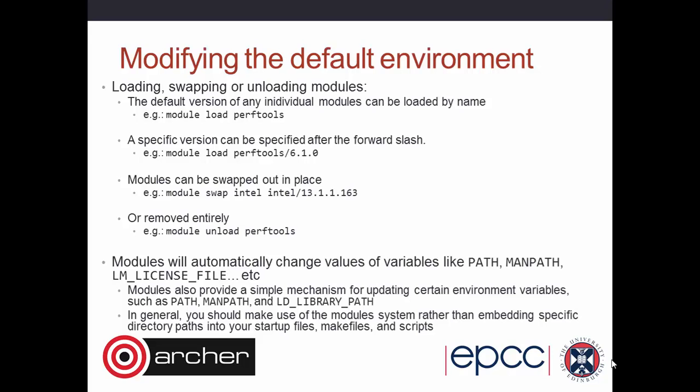If you want to load a module that's not loaded by default, you do 'module load'. For example, there's a package called performance tools which allows you to do performance analysis. You could load a specific version with 'module load perf-tools/6.1.0'. You can also swap compilers — for example, 'module swap intel' to replace the default Intel package with a particular compiler version. And you can unload something with 'module unload perf-tools'.